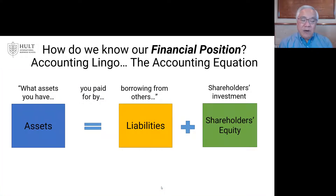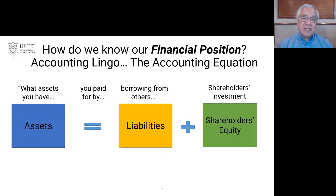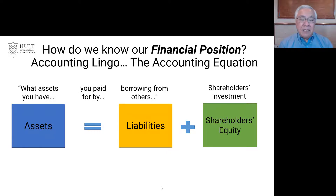First is the accounting equation. The equation is below: assets equal liabilities and shareholders' equity. That's the balance sheet accounting equation. In words: what assets we have were paid for by borrowing from others and from shareholders' investments. The company has assets — they don't get those out of thin air. They borrowed money to help pay for those assets, got money from shareholders, and earned some profits to sustain the business. And all that has to balance in the balance sheet.